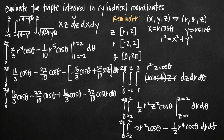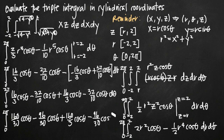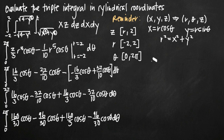Combining all terms: 16 thirds cosine theta minus 32 tenths cosine theta plus 16 thirds cosine theta minus 32 tenths cosine theta. Using a common denominator of 30: 16 thirds becomes 160 over 30, and 32 tenths becomes 96 over 30. After doing the arithmetic and reducing the fraction, we end up with the integral from 0 to 2 pi of 64 over 15 cosine theta d theta.